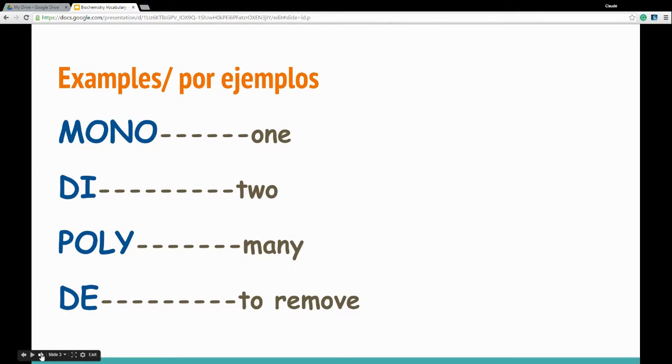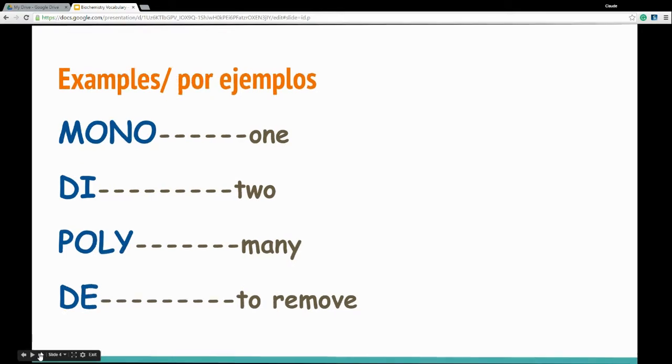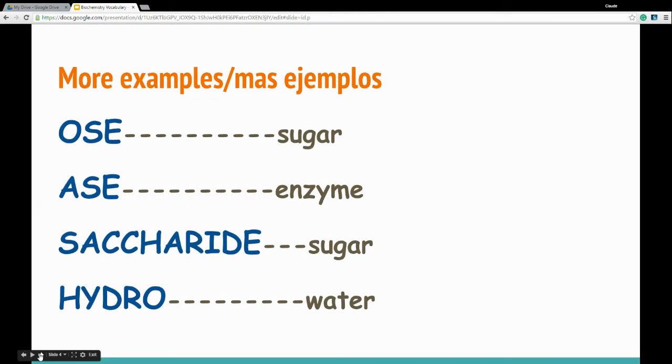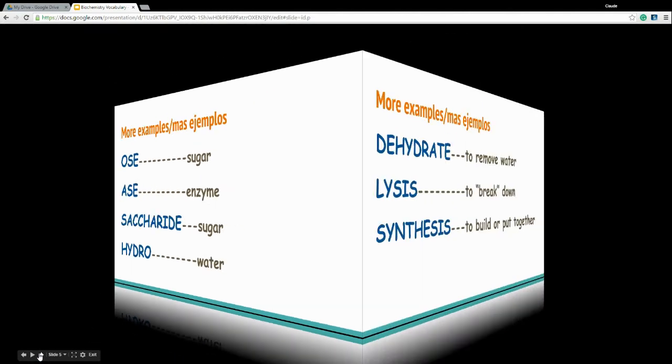Mono means one, di means two, poly means many, de means to remove. Ose means sugar, ace means enzyme, saccharide means sugar, hydro means water.